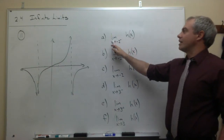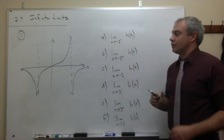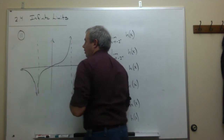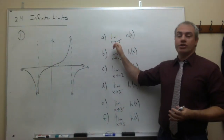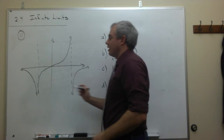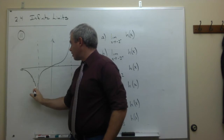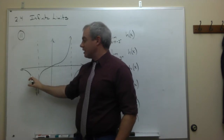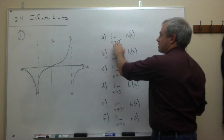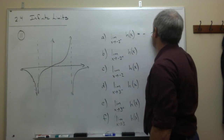The first limit we'd like to look at is the limit as x goes to negative 2 from the left of h of x. Negative 2 is the x value where we have this vertical asymptote. As we approach negative 2 from the left side, we can see that this graph is heading off to negative infinity. So the limit as x goes to negative 2 from the left of h of x is negative infinity.